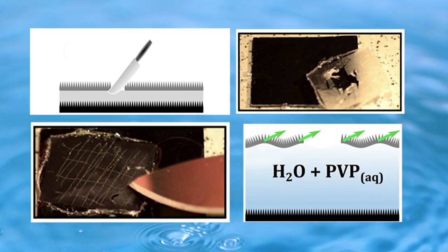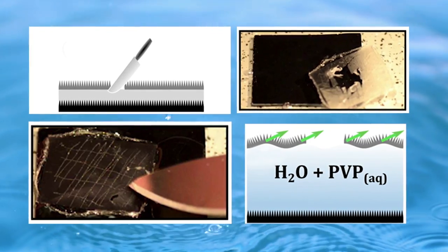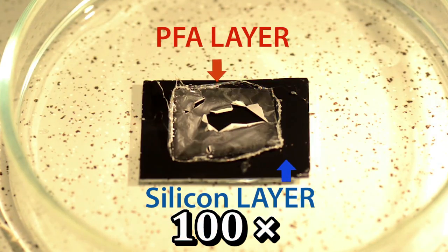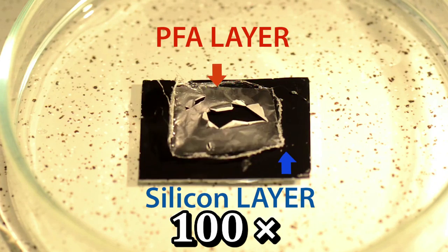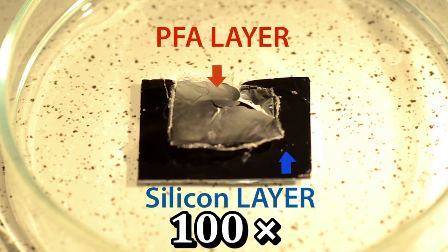To test their approach, the scientists scratched the coating with a scalpel and submerged the material in water. When water seeps through the cut, the researchers say that the polymer comprising the middle layer dissolves.